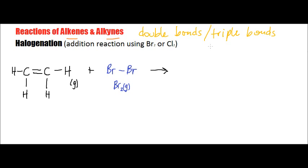These kinds of reactions will take place a little bit easier. If you look back at the video about reactions of alkanes and the substitution reactions, they were more likely to occur in the presence of heat or UV light. However, with some of these alkene and alkyne reactions, typically just room temperature is good enough to allow for these to actually take place.